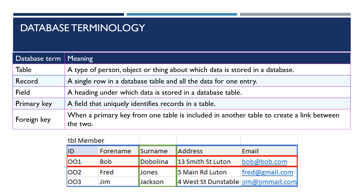A foreign key is when a primary key from one table is included in another table to create a link between the two tables. This happens in relational databases, which we'll be learning more about in the next video. Let's assume our members table below is being used in a database for members of a magazine subscription service. In another table called subscriptions, we could use member ID as a foreign key to create a link between the member and the subscription.